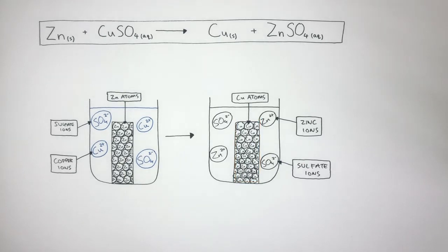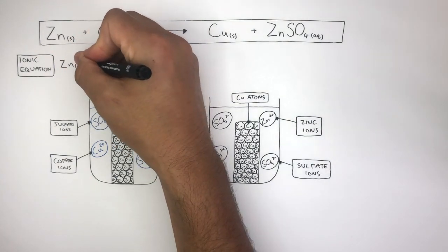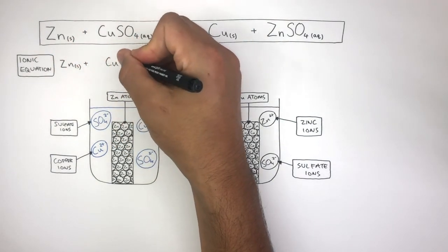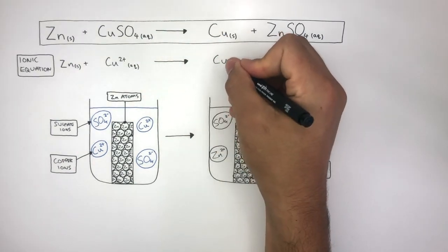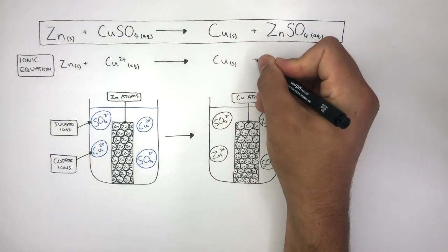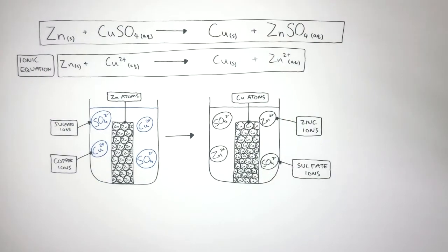We can show what's happened in this chemical reaction using an ionic equation. The ionic equation is: Zn(s) + Cu²⁺(aq) → Cu(s) + Zn²⁺(aq). Notice how the SO₄²⁻ ion — the sulfate ion — has not been included, as it is a spectator ion.